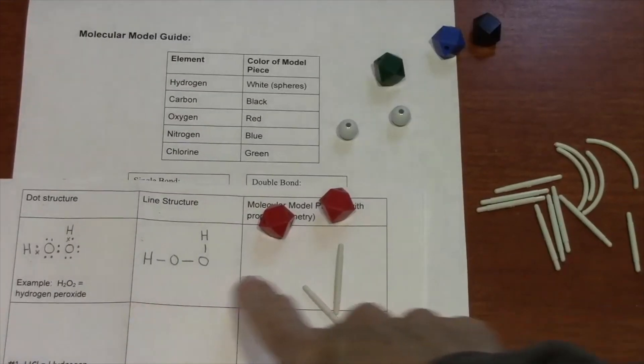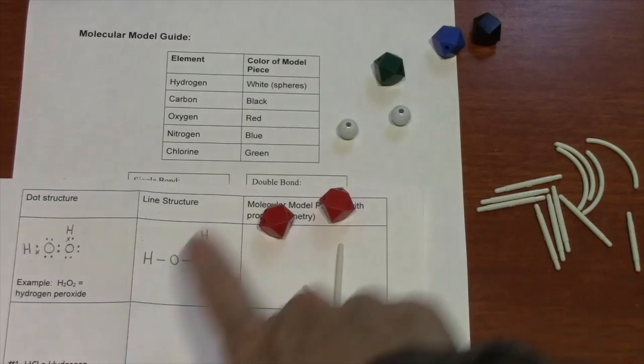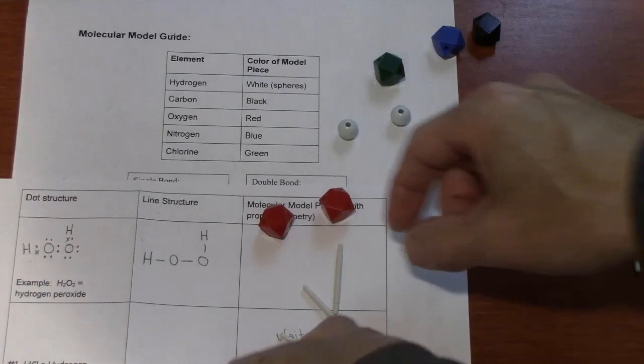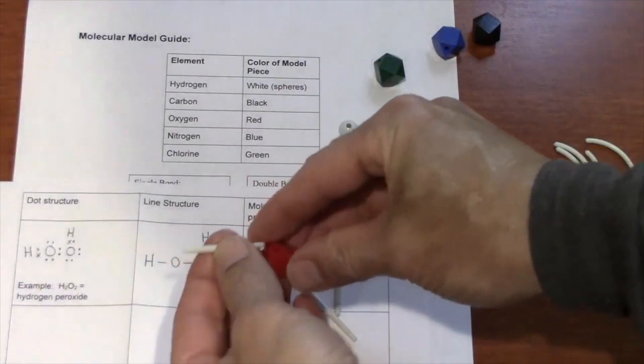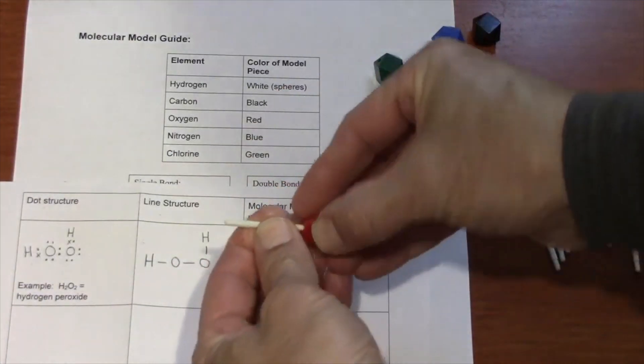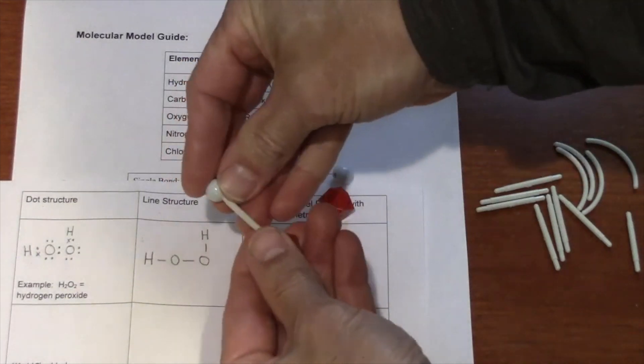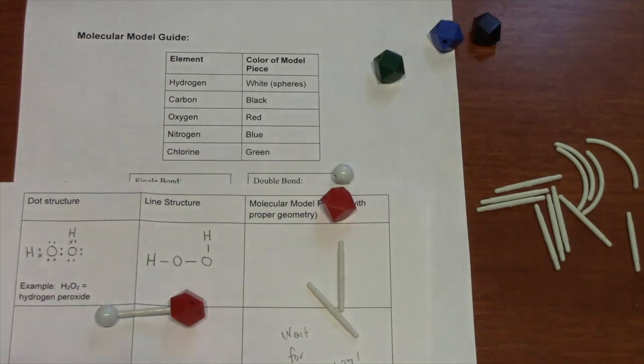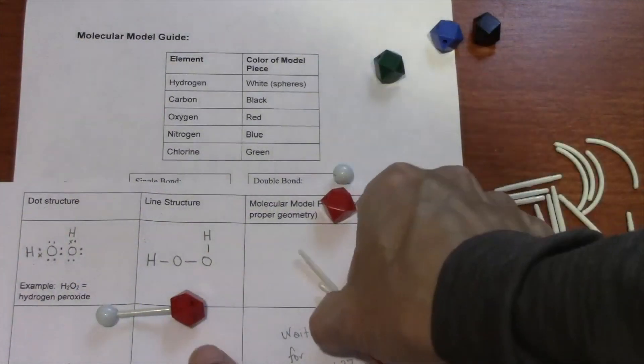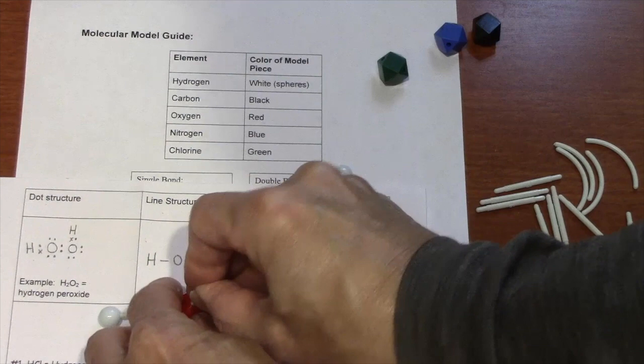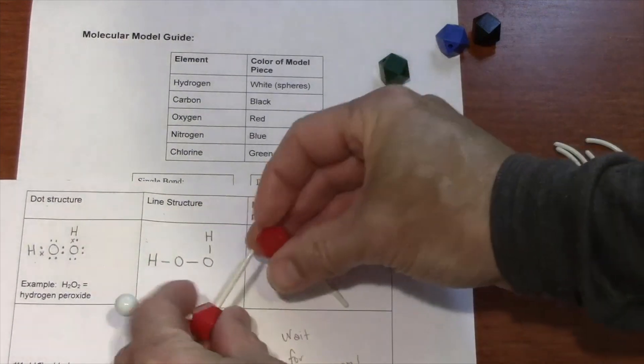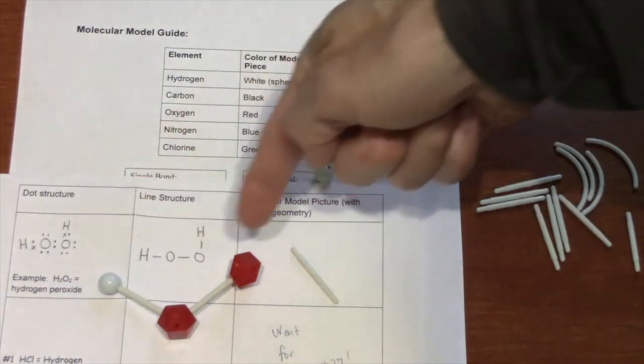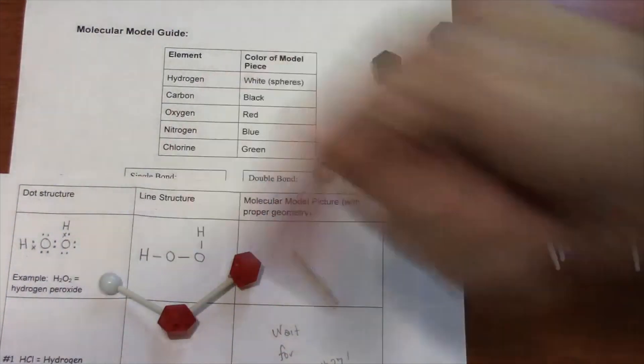Here I need four atoms, two oxygens, two hydrogens, and the bonds are clearly shown. So I take a hydrogen and an oxygen and stick them together. That's the HO part right there. Then I stick another oxygen on.